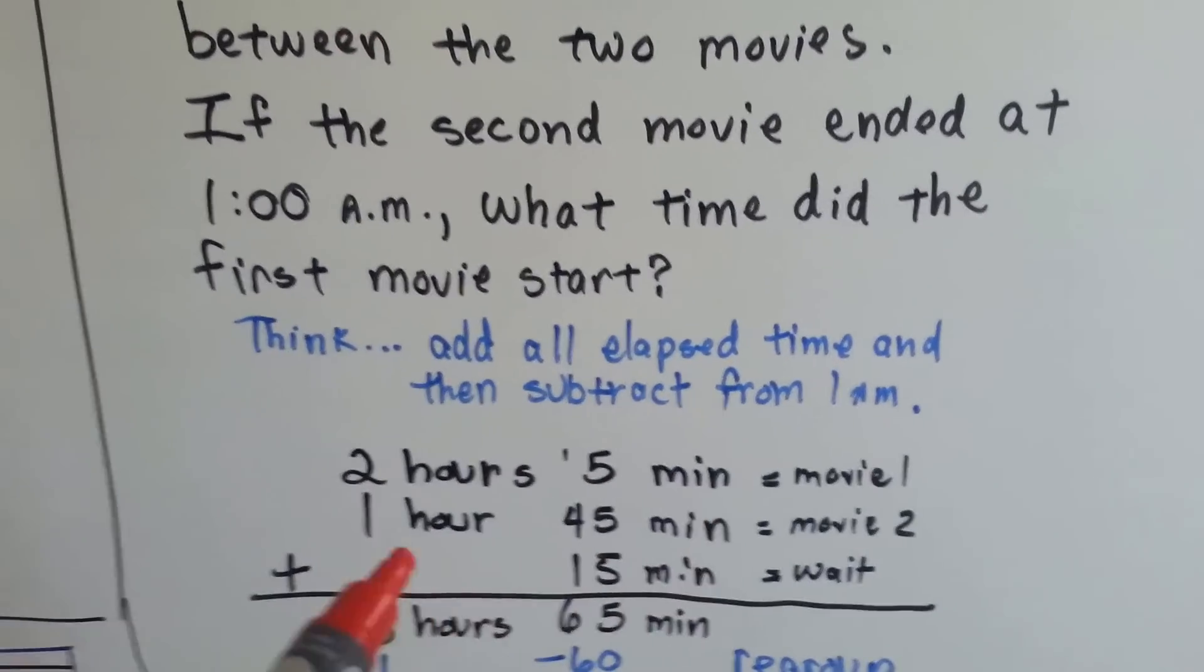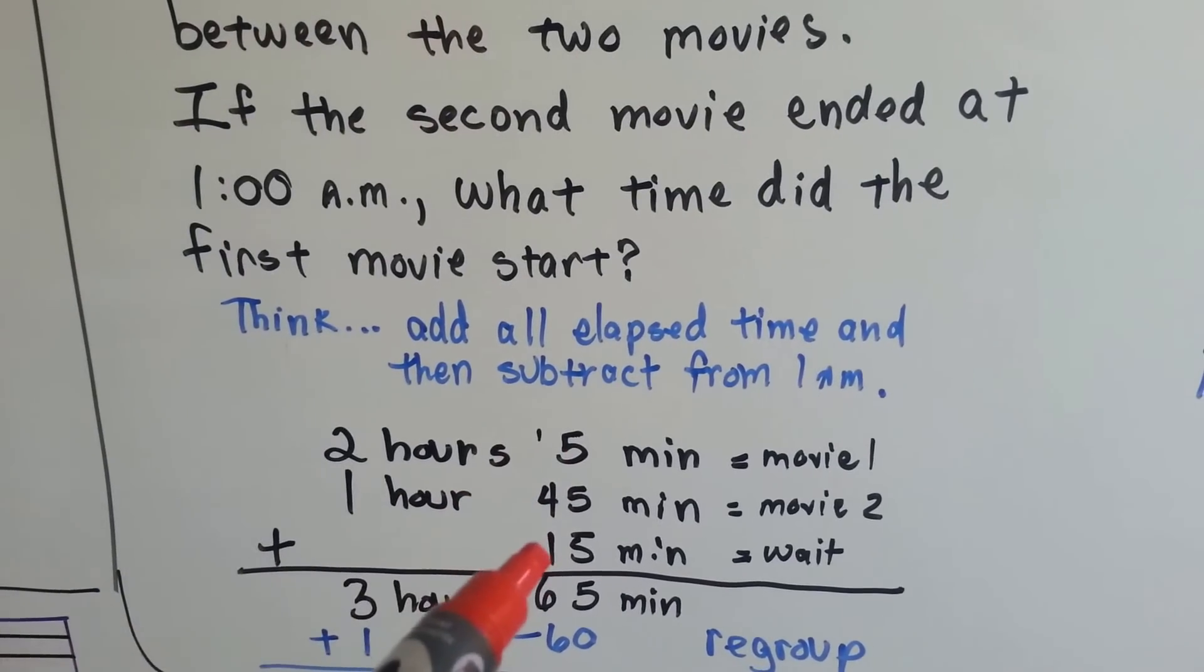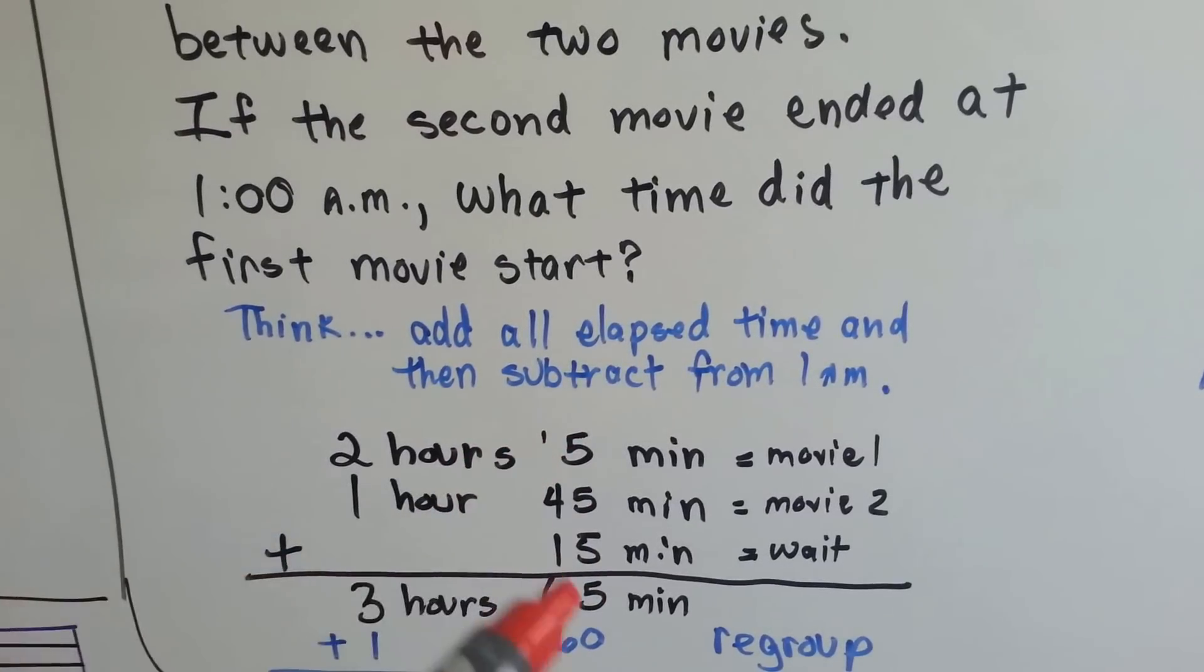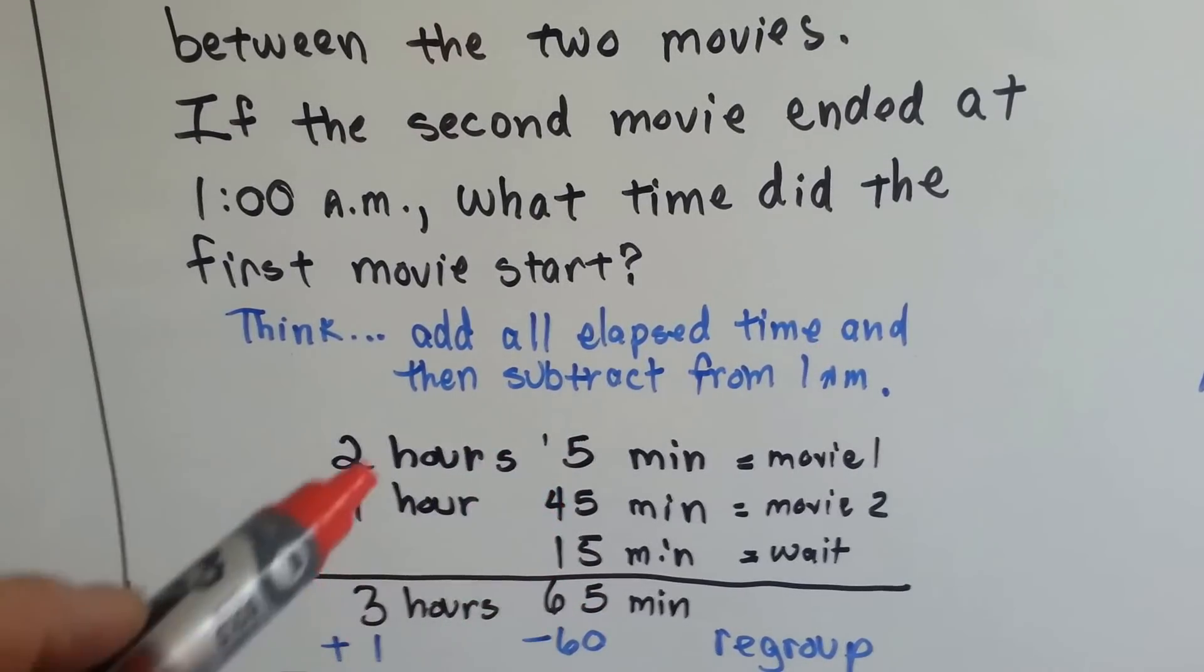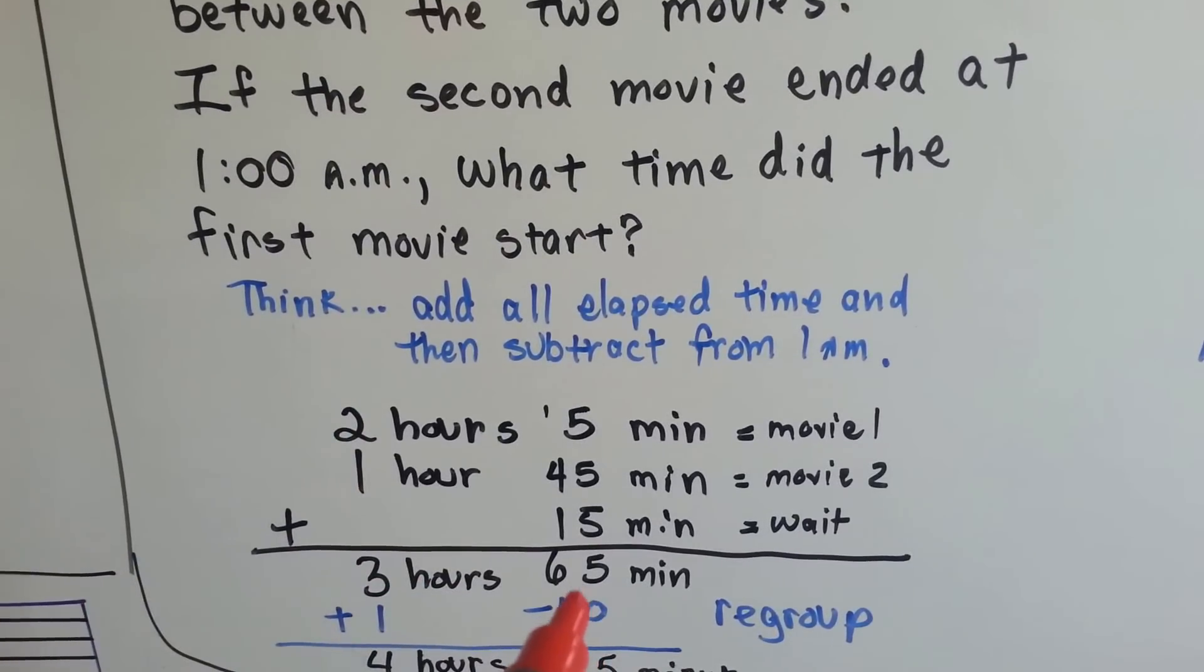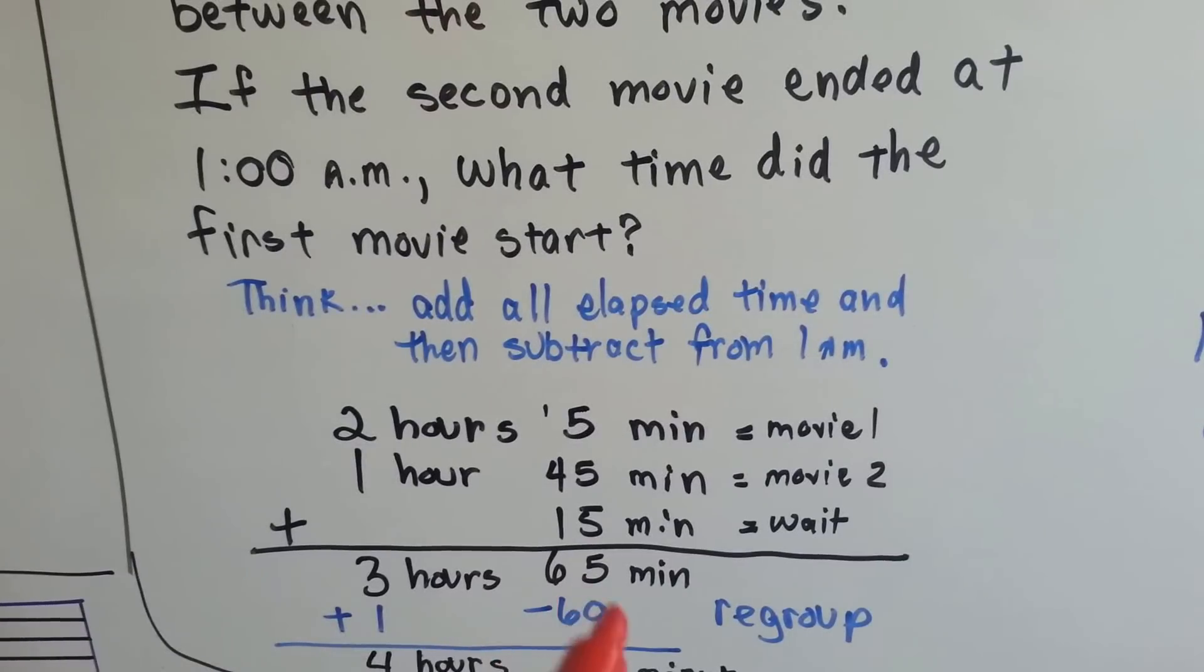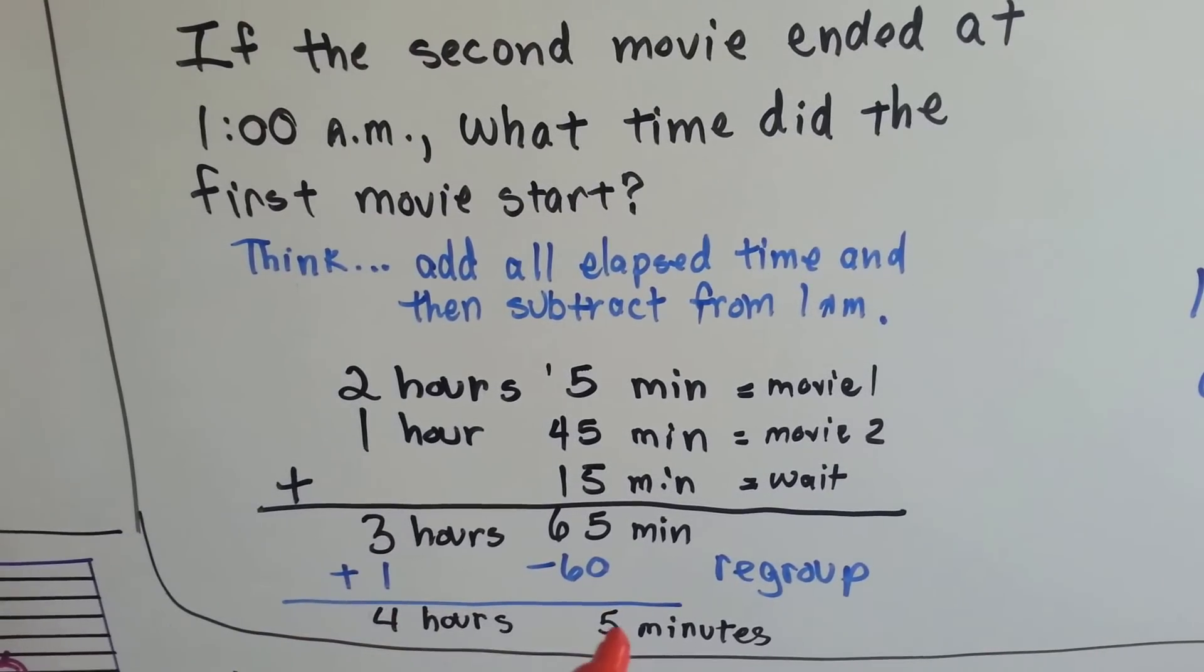We need to add the first movie of two hours and five minutes, the second movie of one hour and 45 minutes, and we need to add the 15 minute wait time between the two movies. We add them all together. We add the minutes first: five minutes and 45 minutes and 15 minutes. We get the three fives as 15. We carry the one to put the five down and four, five, six. So we have 65 minutes. And then on this side, we have three hours. Well, we need to regroup this 65 minutes because there's only 60 in an hour. So we take 60 away from the minutes and we give it to the hours. That gives us four hours and five minutes.